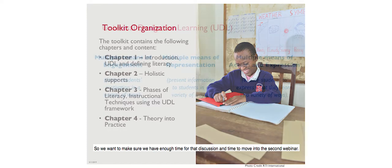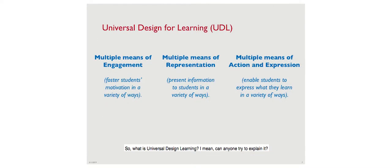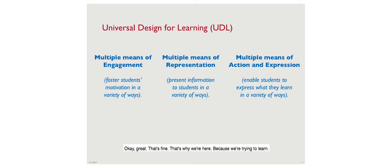So what is Universal Design for Learning? Can anyone try to explain it in their own words - what UDL means? We're here to learn. Universal Design for Learning has three categories. The first category is multiple means of engagement.